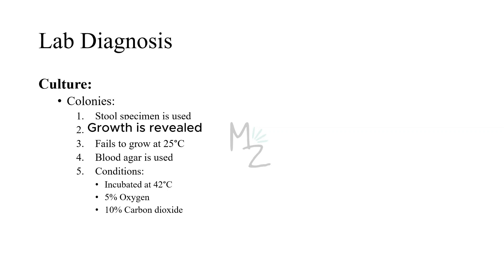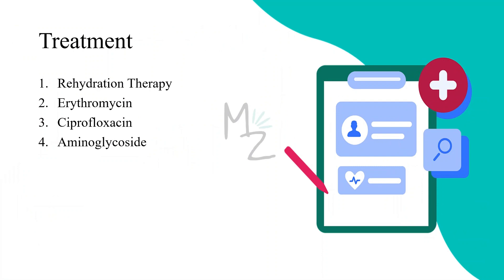Unlike Shigella and Salmonella, lactose fermentation is not used as a distinguishing feature. If bacteremia is suspected, a blood culture incubated under standard temperature and atmospheric conditions will reveal growth of characteristically comma- or S-shaped, motile, gram-negative rods. Identification of organisms as Campylobacter intestinalis is confirmed by its failure to grow at 42°C, its ability to grow at 25°C, and its resistance to nalidixic acid. Treatment includes rehydration therapy for dehydration, infusion of water and electrolytes, erythromycin and ciprofloxacin for infection caused by Campylobacter jejuni, and aminoglycosides for infection caused by Campylobacter intestinalis.